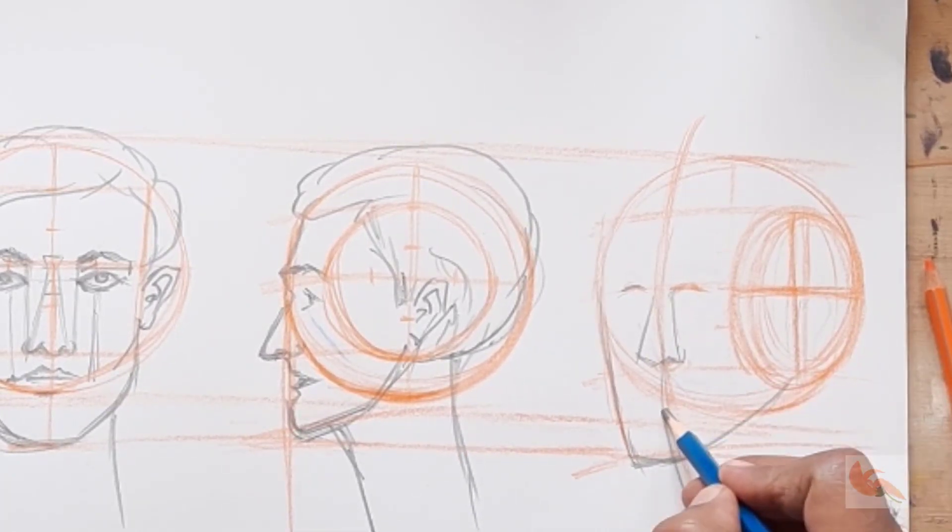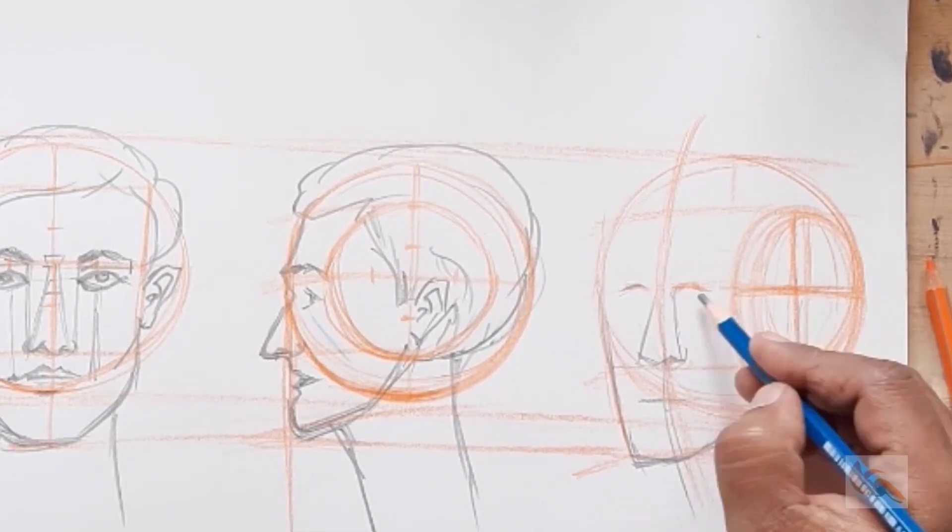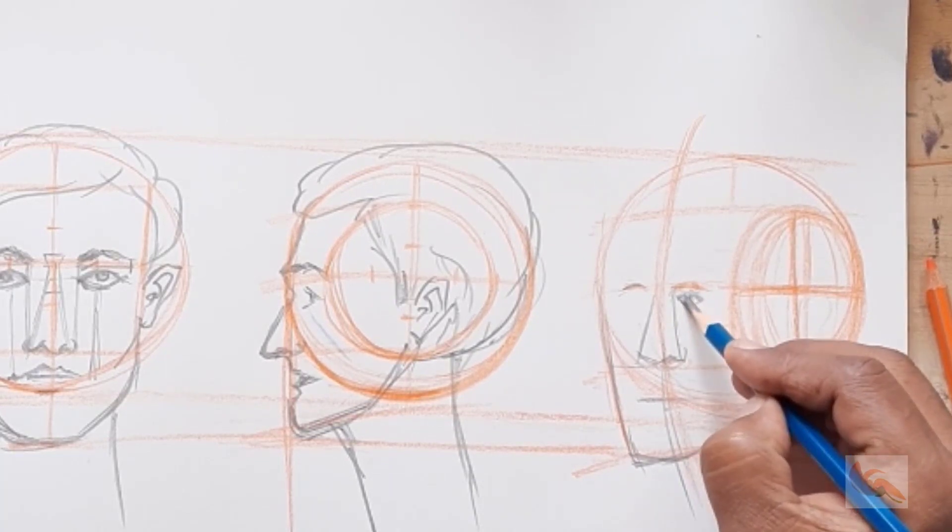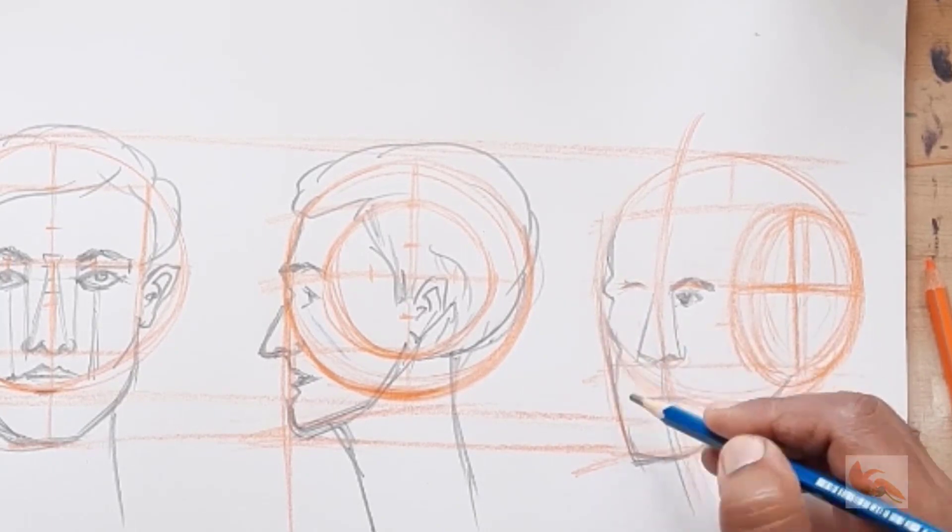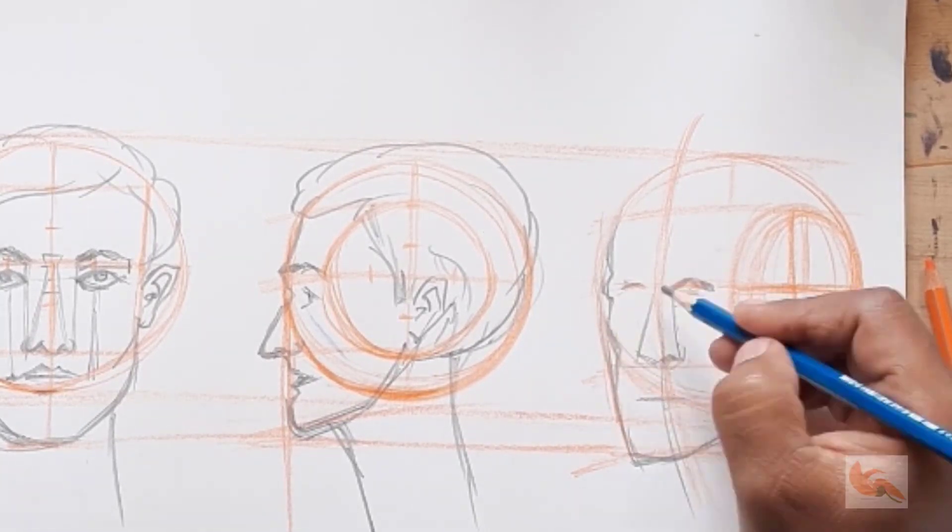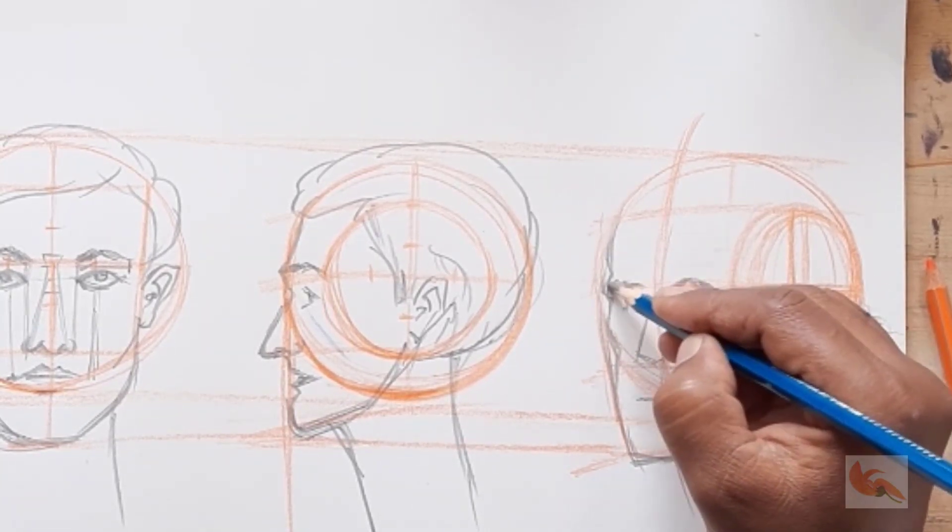Draw the center line of the face. Mark the chin same two-third distance. Mark the jaw line and other features and draw them. The distances remain same but the features would change as the view has changed.